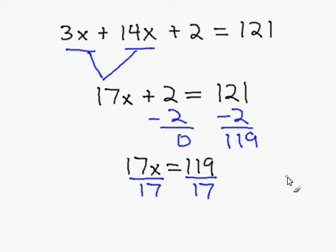The 17 cancels out, and that would leave me with x equals 119 divided by 17 is 7. So, x equals 7 is my resulting answer, and this completes my problem.